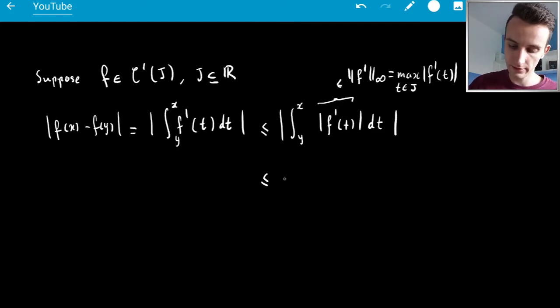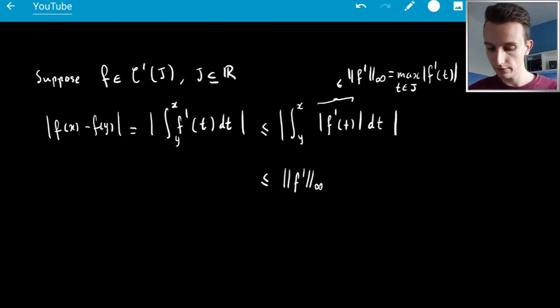so this is less than ||F'||∞, and that's finite, I mean, the infinity norm of F', it's not F' at infinity, times |X - Y|, and so this can be your Lipschitz constant,